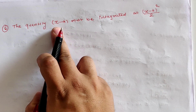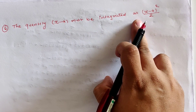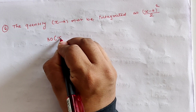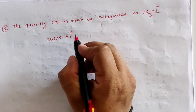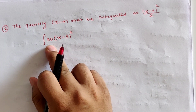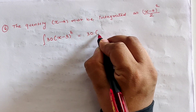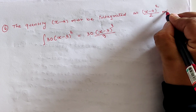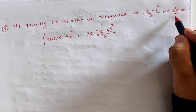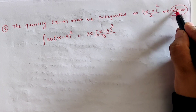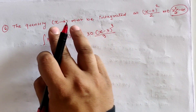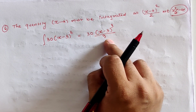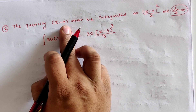The sixth assumption is that the quantity (x − a) in the calculation must be integrated as (x − a)² / 2. For example, integrating 30(x − 3)² must be written as 30 × (x − 3)³ / 3, not as x²/2 − ax. The whole term (x − a) is treated as a single constant and integrated as (x − a)^(n+1) / (n+1).